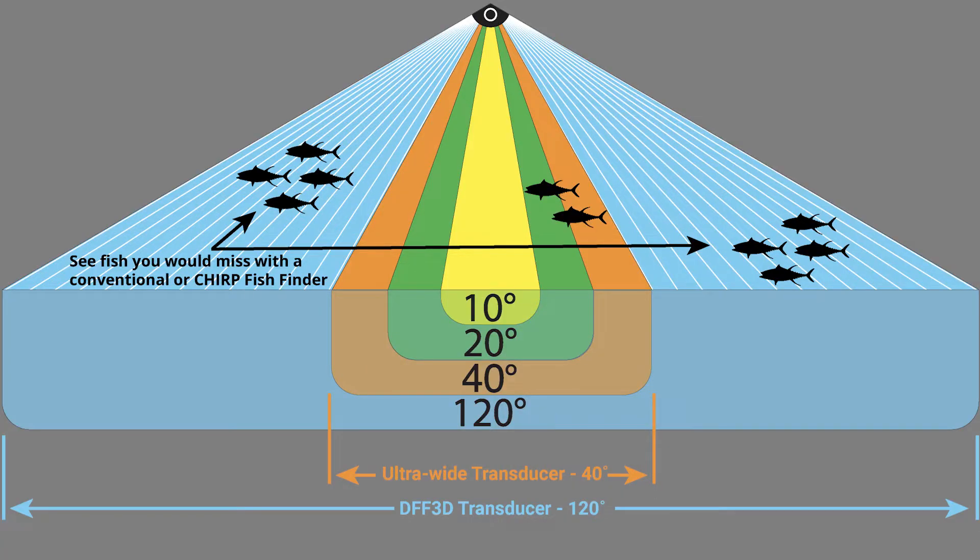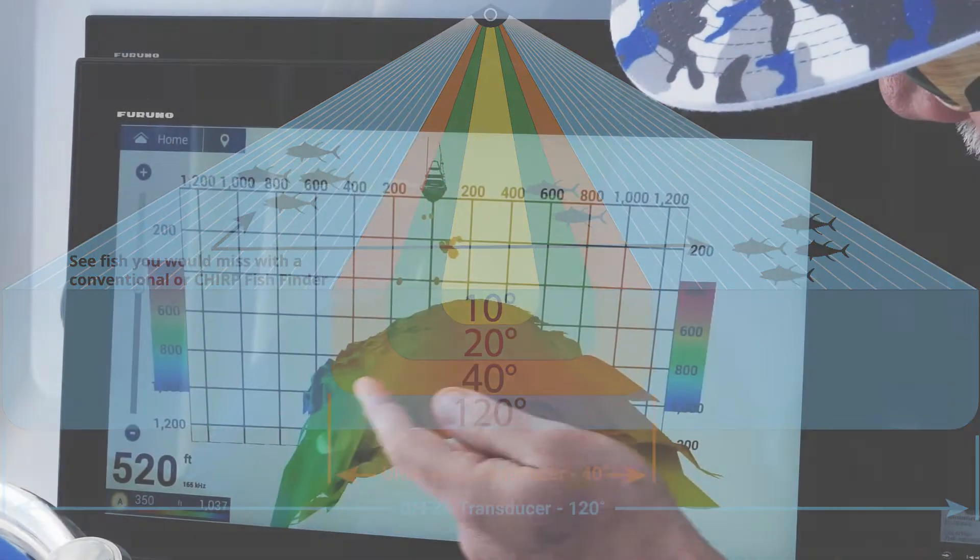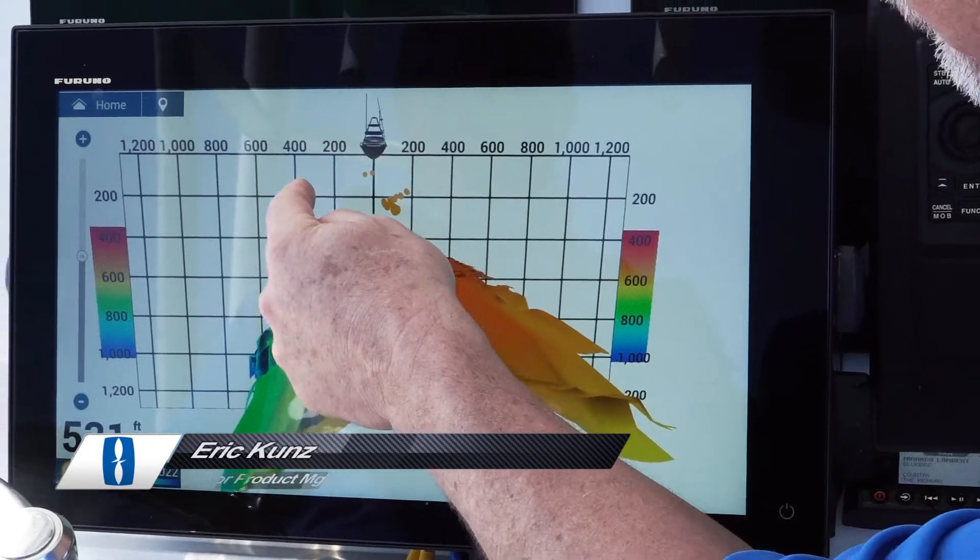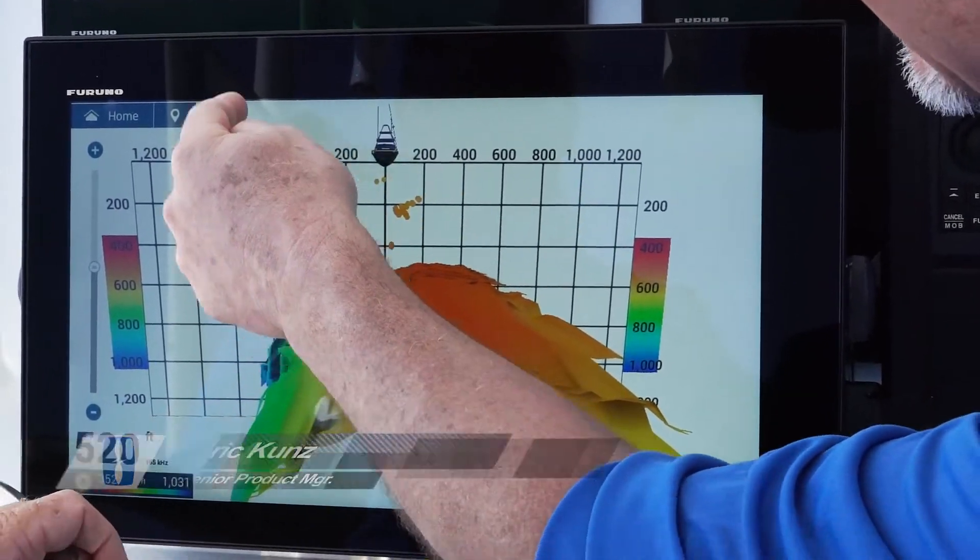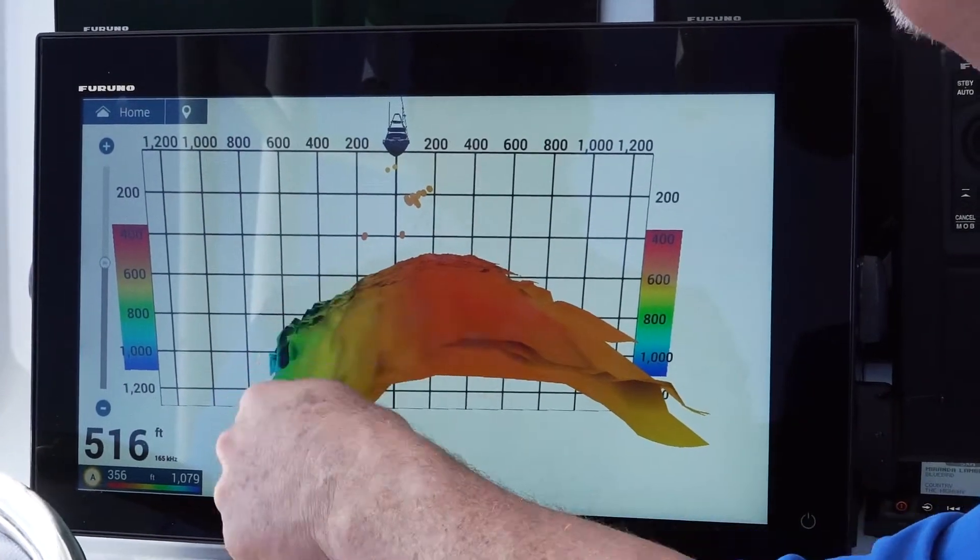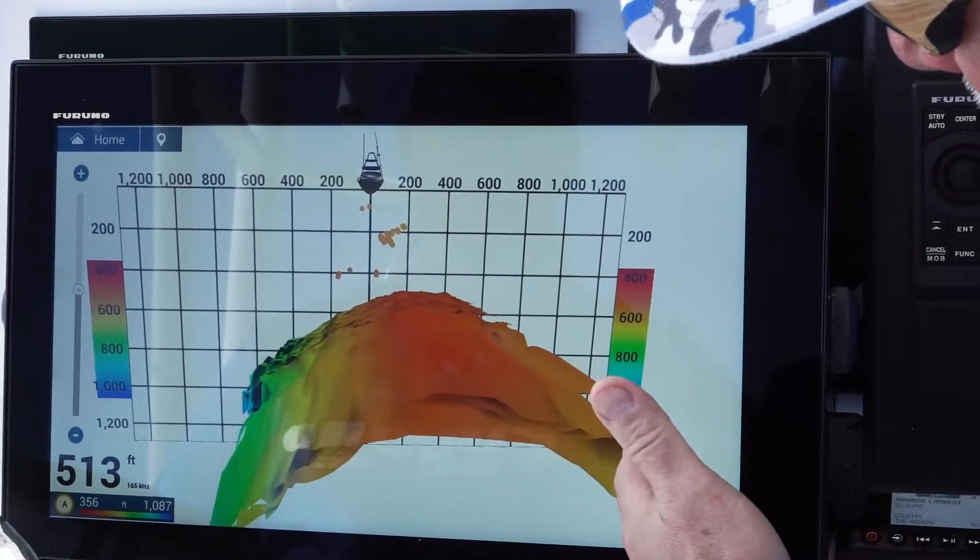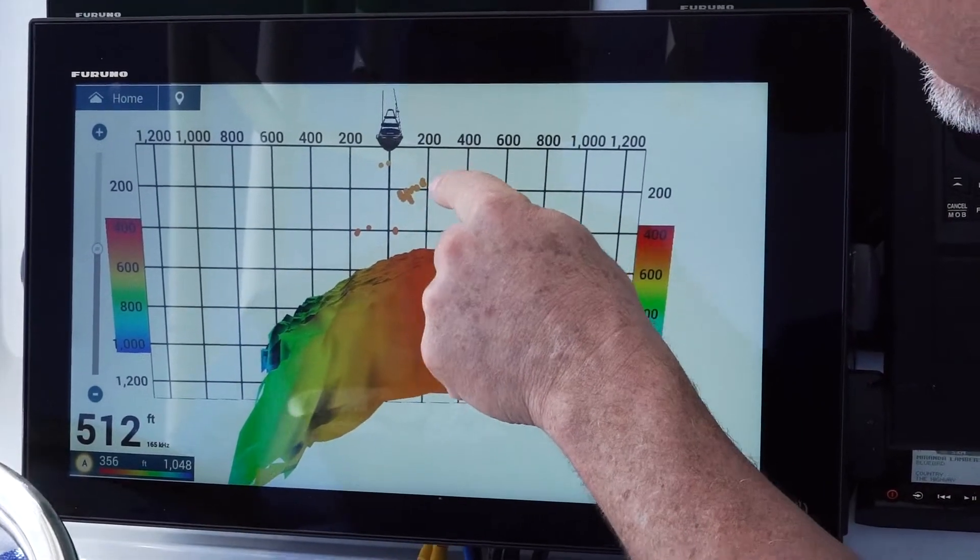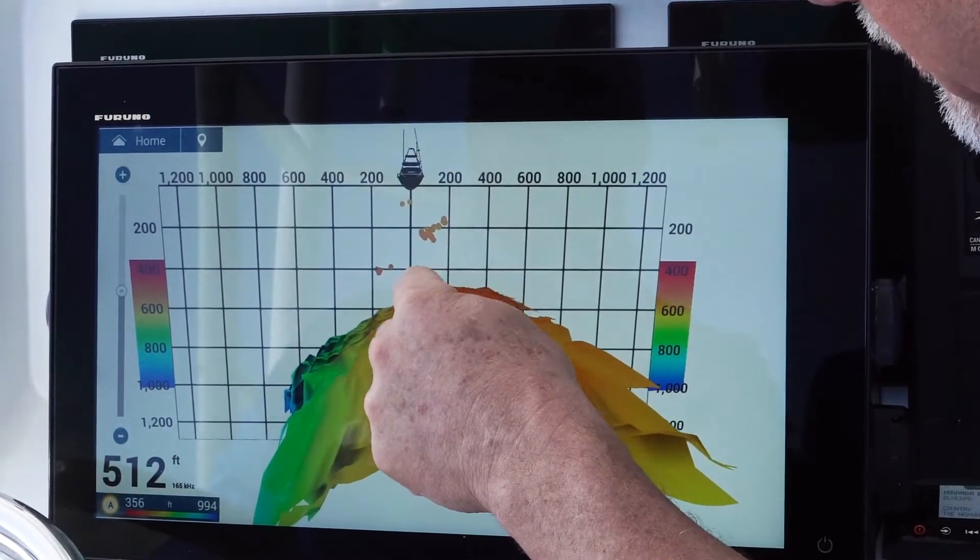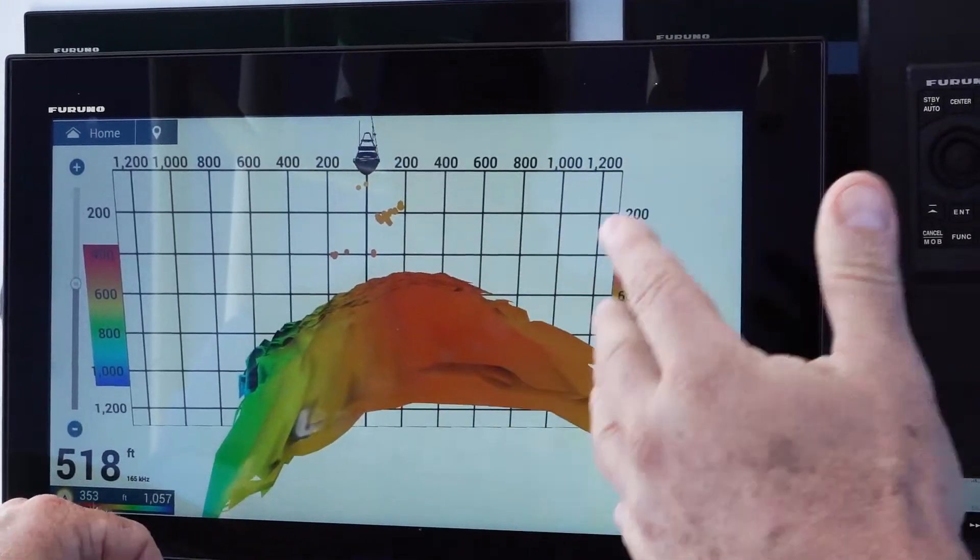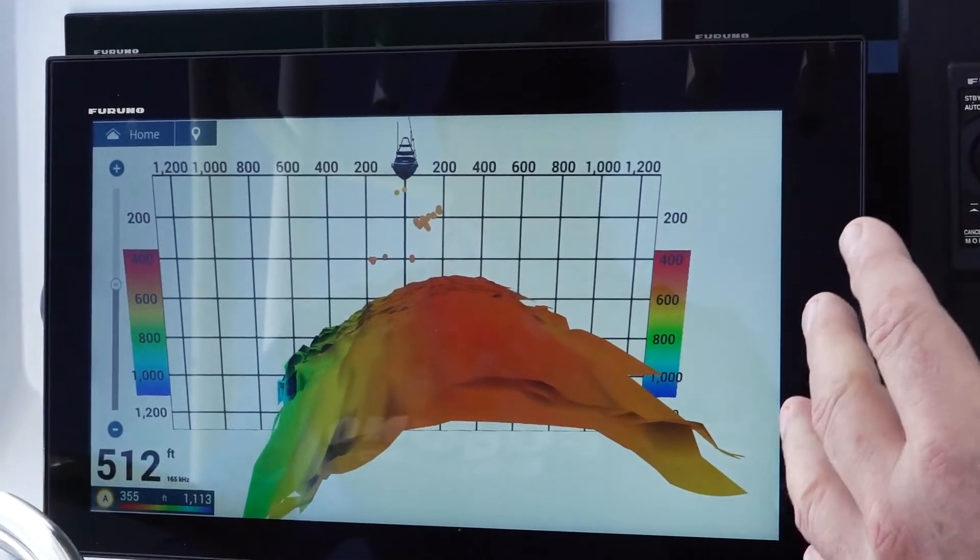We're looking at a 120-degree wide swath right now, and it's giving us this historical information. We're in 520 feet of water, but we're looking out 200, 400, 600 feet as the drop-off occurs on the Marathon hump. We can see fish directly under the boat and off to the side.